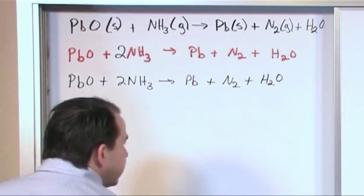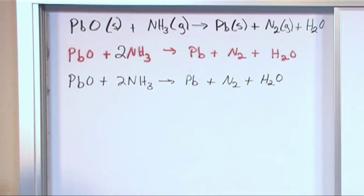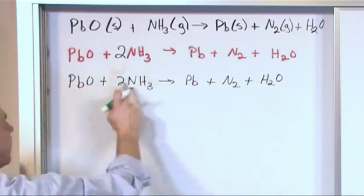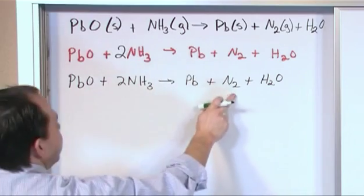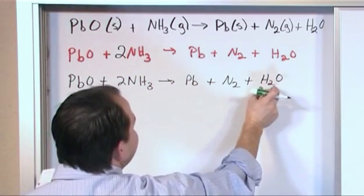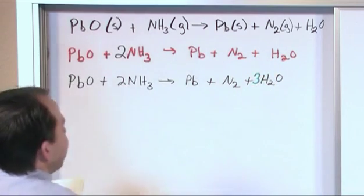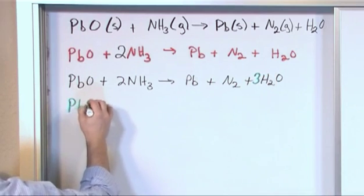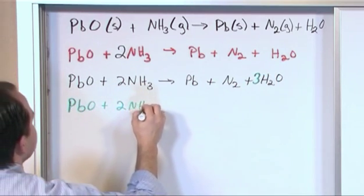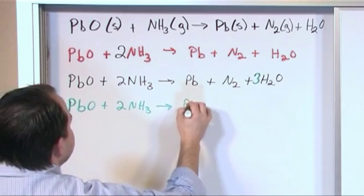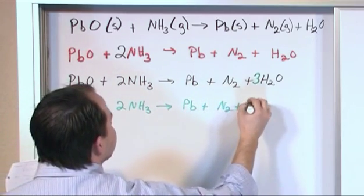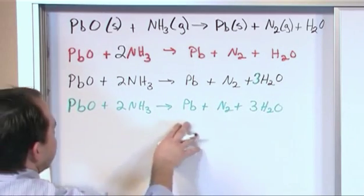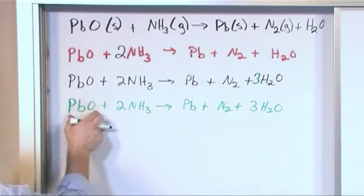All right so we continue looking around trying to find stuff to balance here. And we'll notice now we have one lead, one lead, one oxygen, one oxygen, two nitrogens, two nitrogens, six hydrogens. We only have two hydrogens so let's put a 3 here to make me have six hydrogens. So I've balanced the hydrogen. So let me go back and rewrite it again. PbO plus 2 NH3 yields Pb plus N2 plus 3 H2O. Now in the process of doing that, we kind of screwed up things a little bit because the lead is still balanced, the oxygen we have...